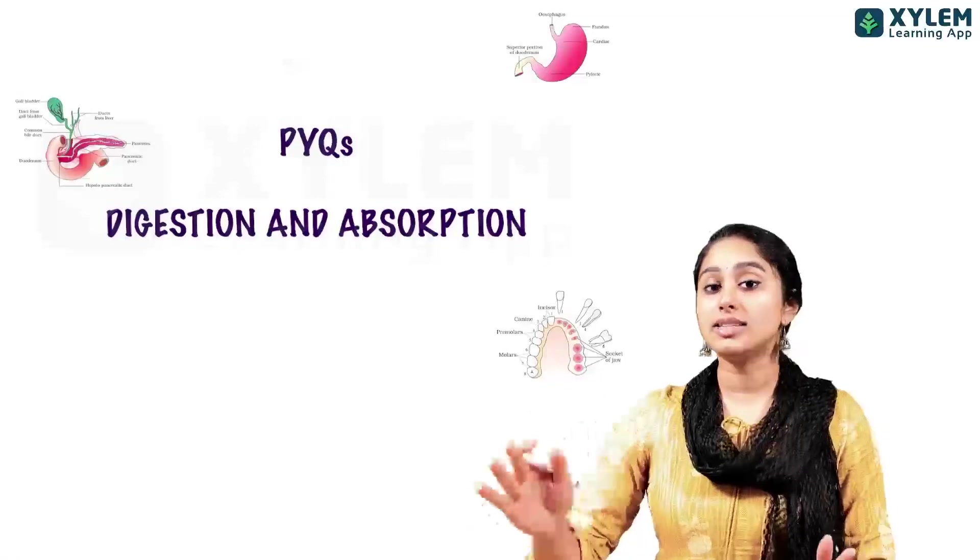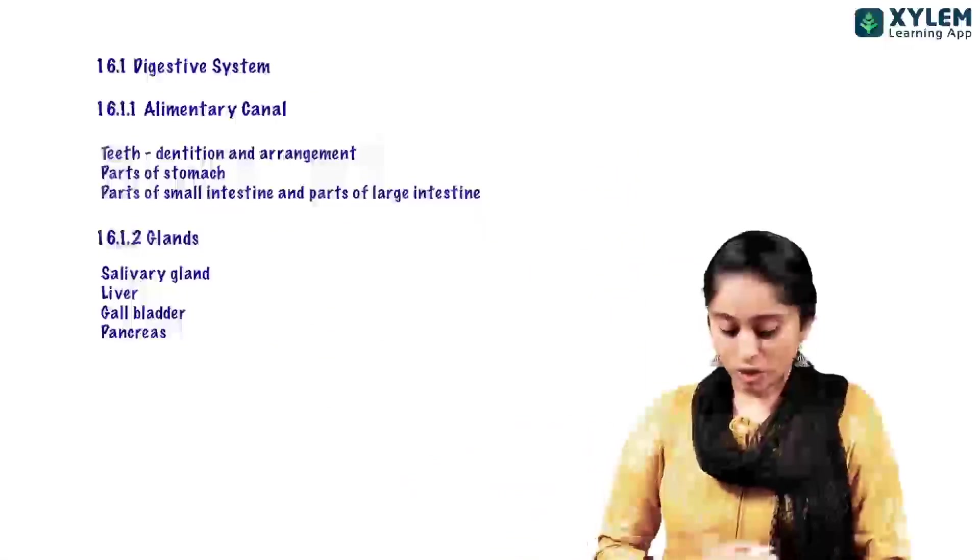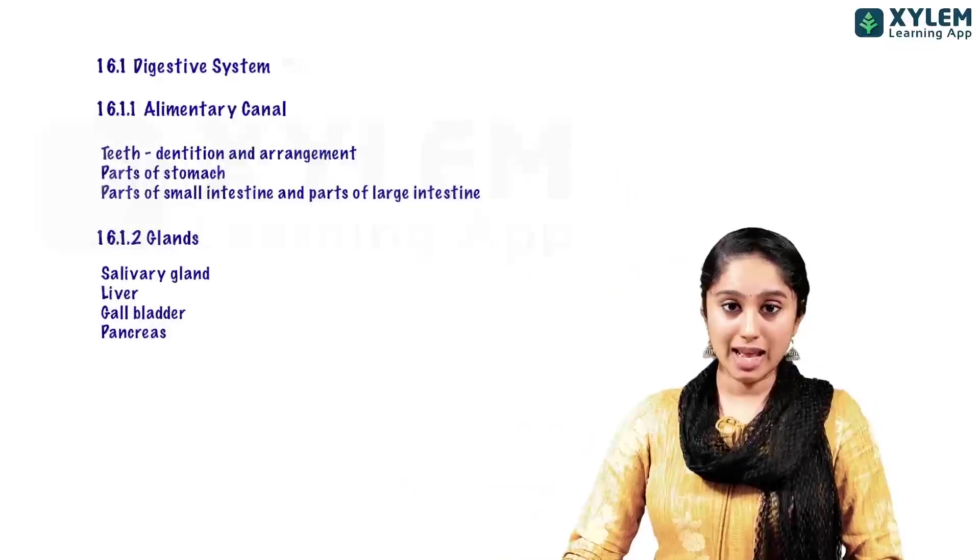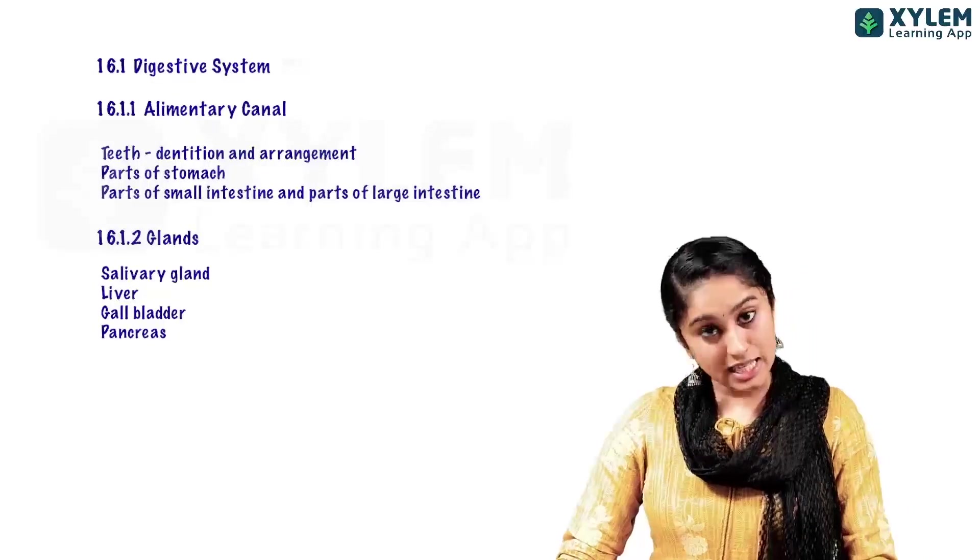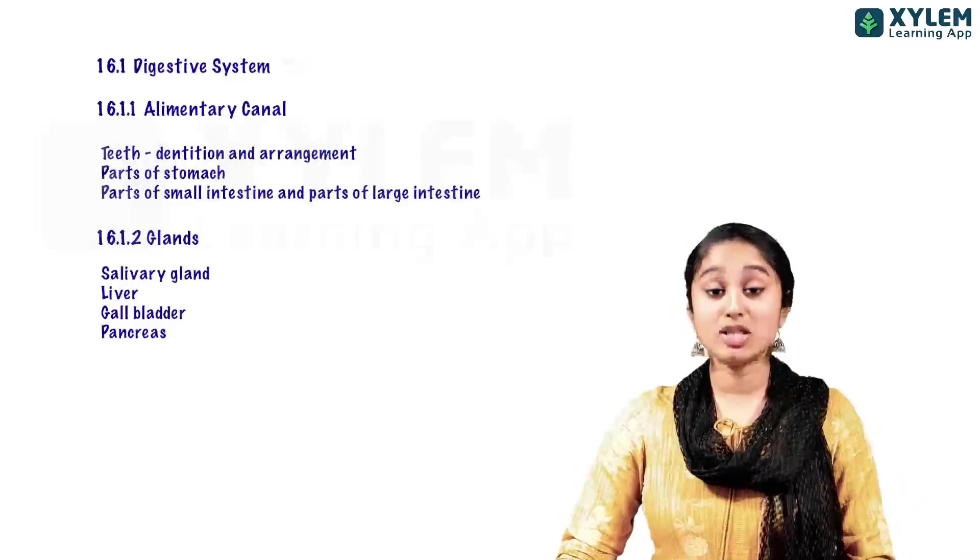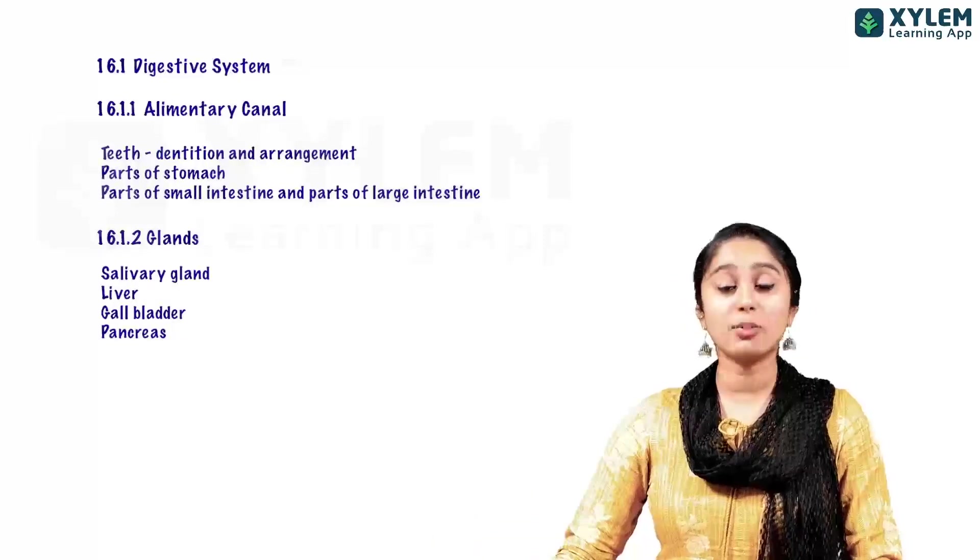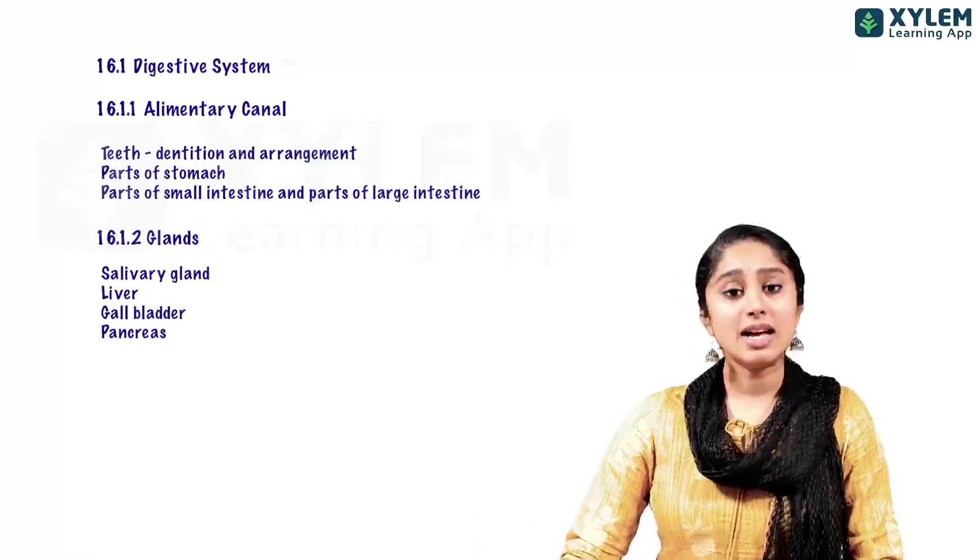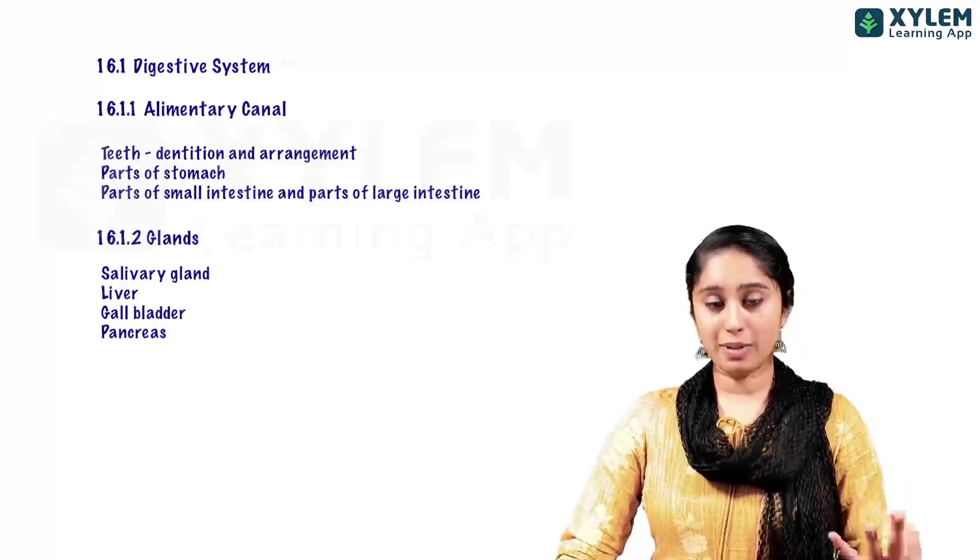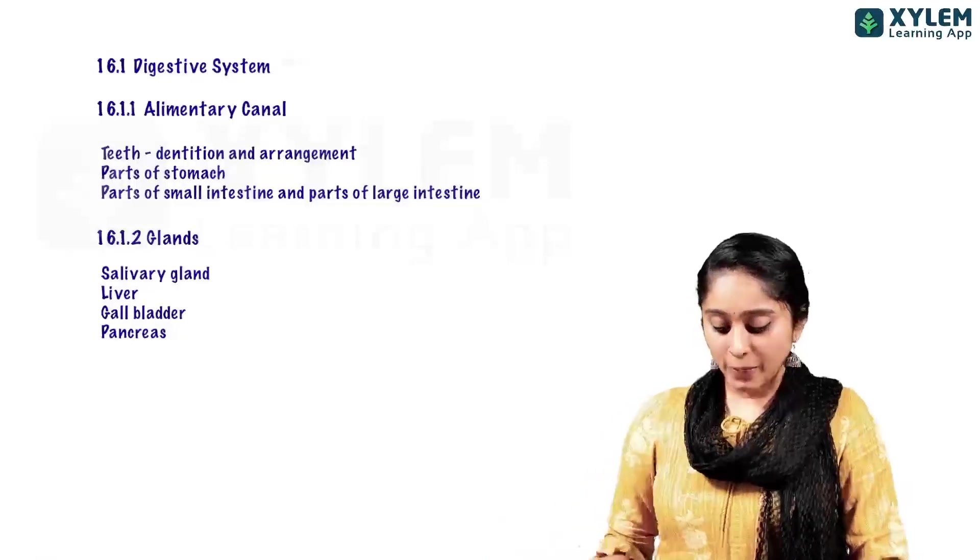the previous year's questions, in four sections, we have our alimentary canal, teeth, parts of the stomach, parts of the intestines, all the first section. And for glands, we have salivary gland, liver, gallbladder and pancreas.